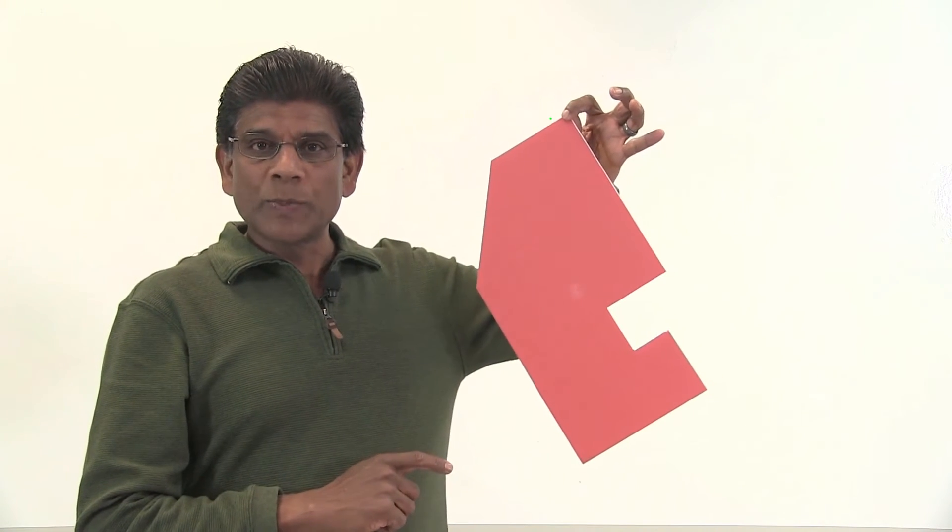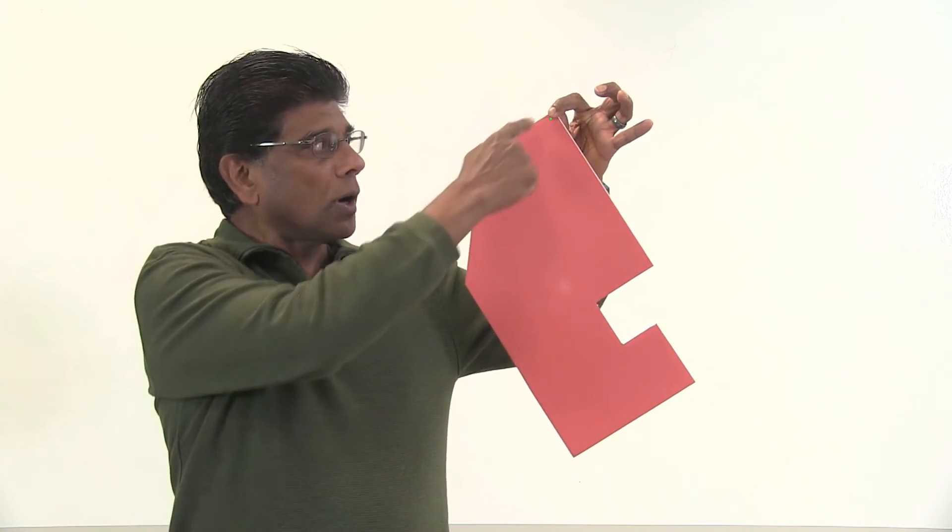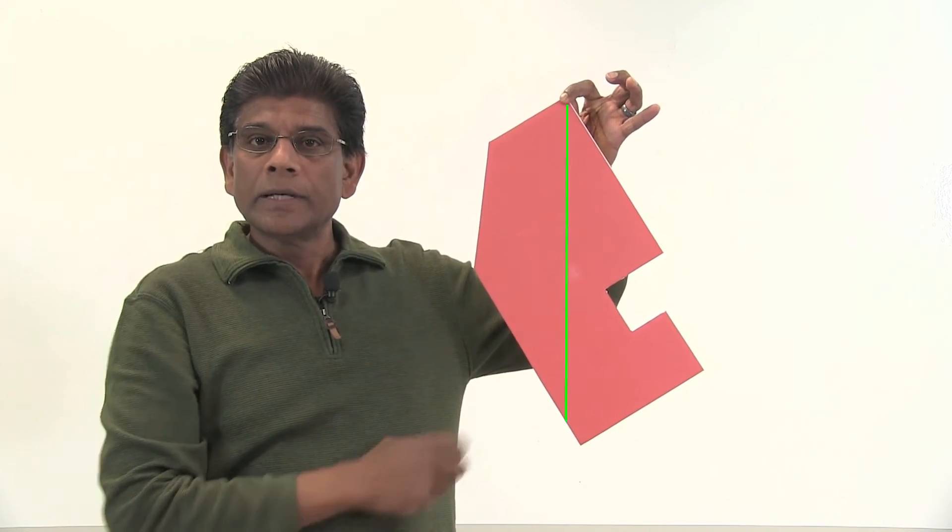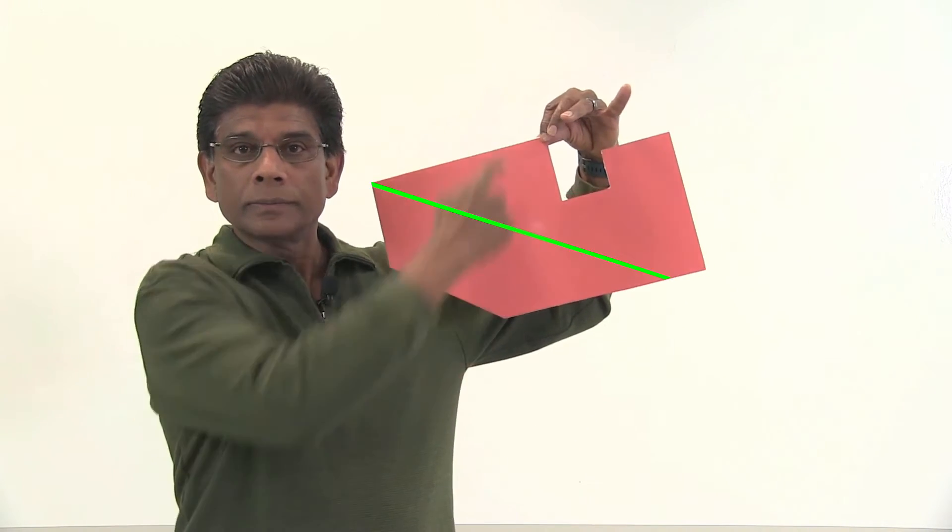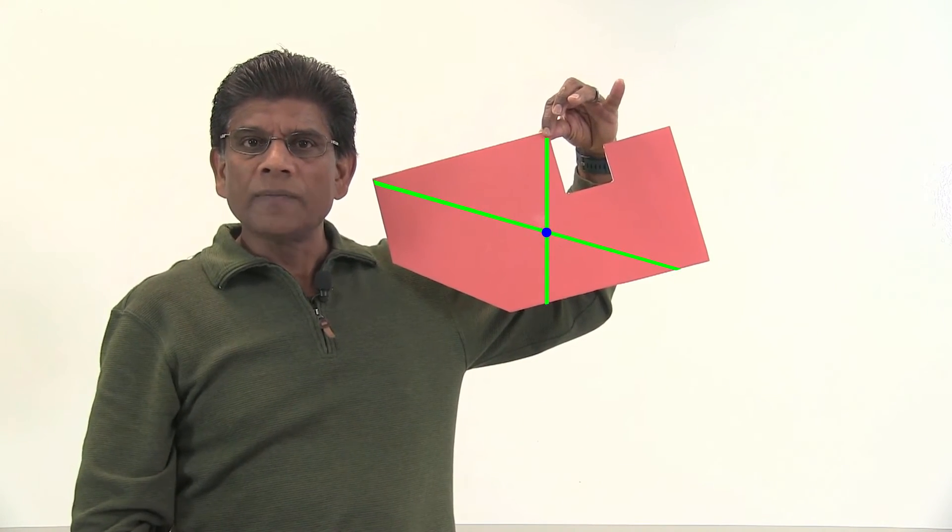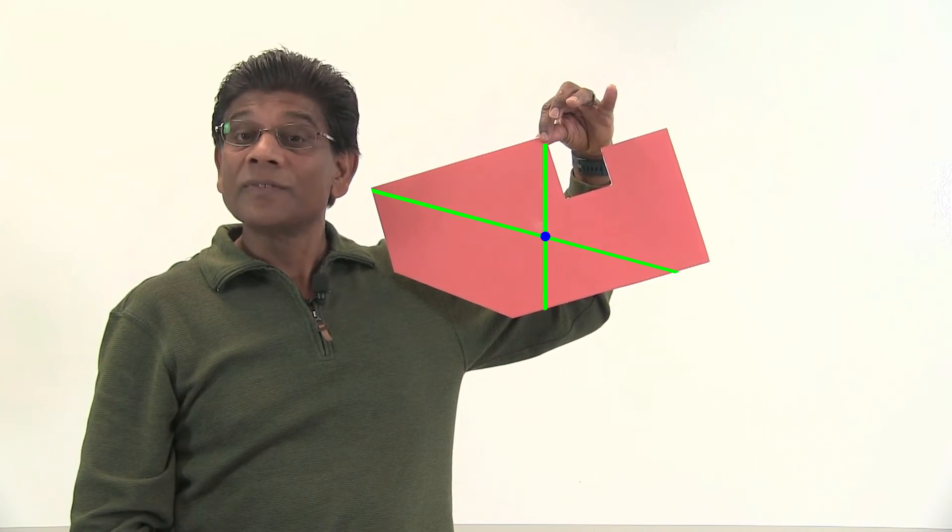I'm going to suspend the shape from this point. Let me draw a line. Now do the same thing with the second point. The intersection of the two lines is the center of gravity.